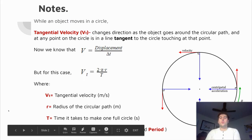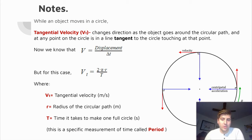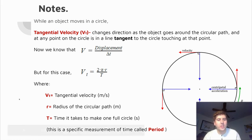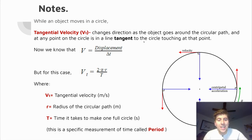Alright, so starting off, we've already kind of talked a little bit about circular motion in class, so you should know some of these words already. But we're going to go over them in a little bit more detail and look at what their equations are going to be. So this first one is tangential velocity. Tangential velocity changes direction as the object moves around a circular path — it's always wanting to go in a straight line. You can see on this circle the tangential velocity are these red arrows, always wanting to go on a line tangent to the circle at that point.